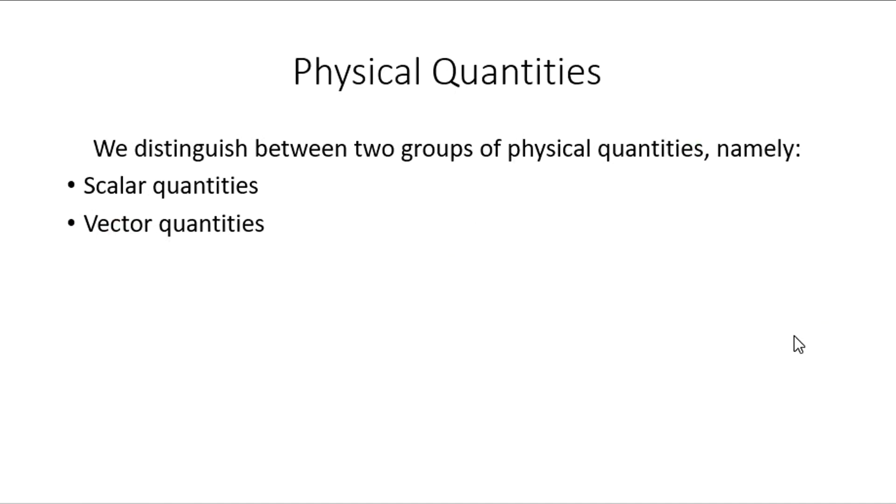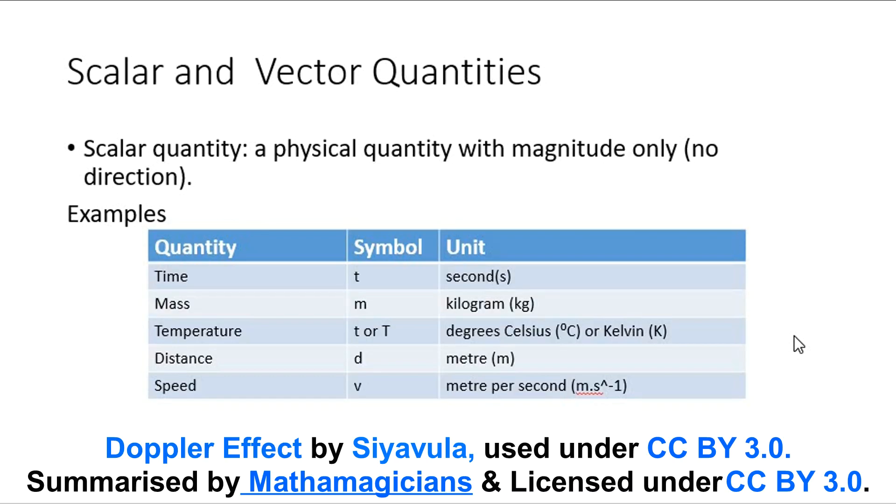Let's dive straight into the differences between scalar and vector quantities. Starting with the scalar quantity. The definition for a scalar quantity is, it is a physical quantity with magnitude only and no direction. Magnitude, which is another fancy word for size. And over here in the table, we have examples. I'm not going to go through all the details because I mentioned a few on the previous slide. The ones I didn't mention was time and temperature. That's a scalar quantity.